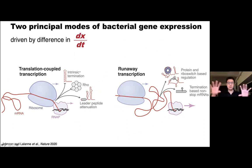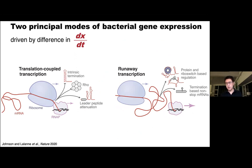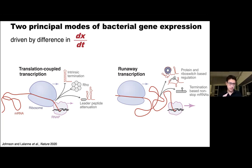Overall, the bacterial world has at least two modes of transcription: translation-coupled transcription, and runaway transcription. These lead to different spaces of co-transcriptional gene regulation — E. coli favors using ribosomes to regulate termination, while Bacillus relies on RNA binding proteins and riboswitches. All of this is driven by a simple difference in the speed of the RNA polymerase — not just instantaneous speed, but average speed. We're going towards understanding what determines that average speed and how local variations in speed influence further mechanistic events.